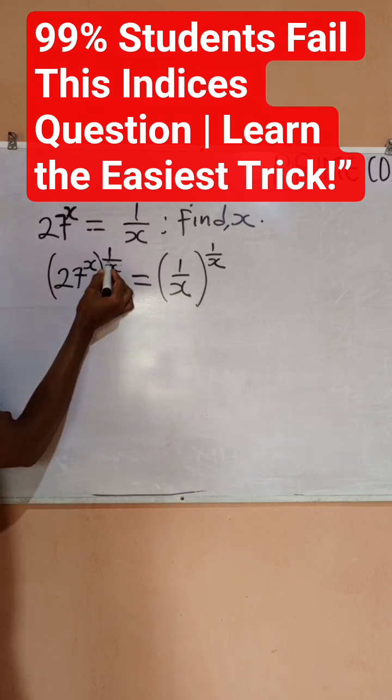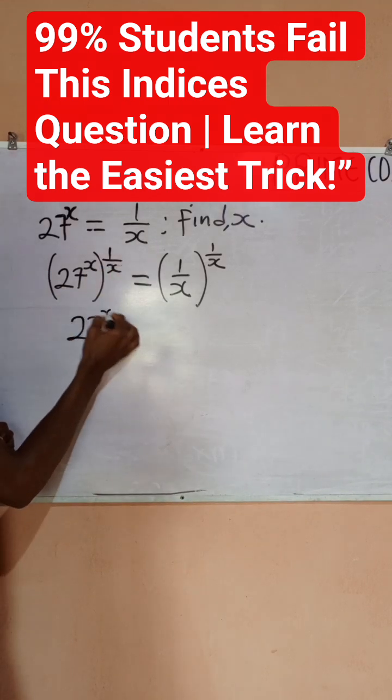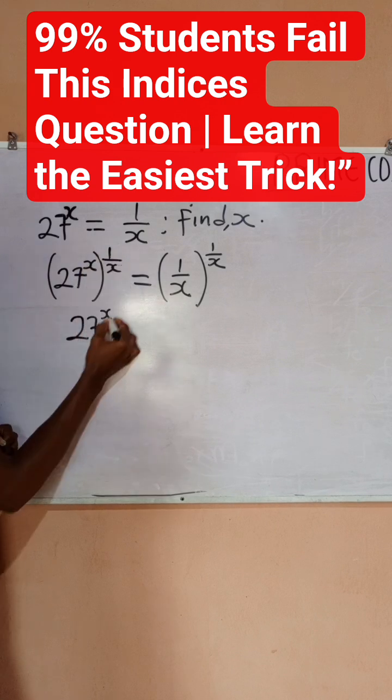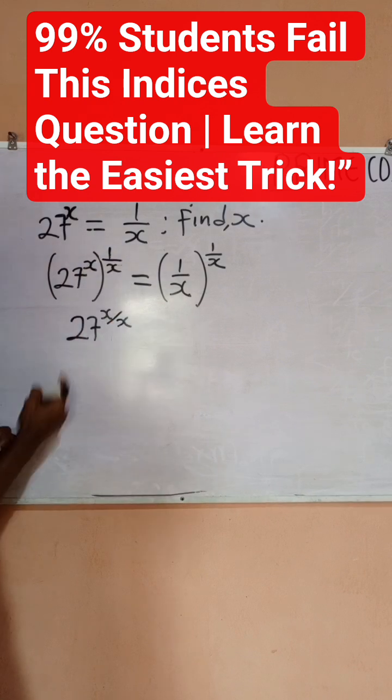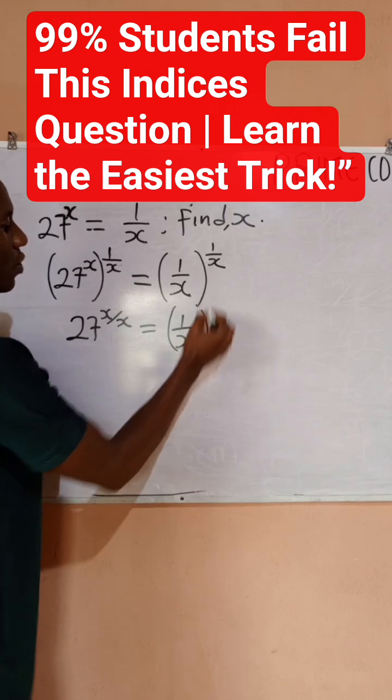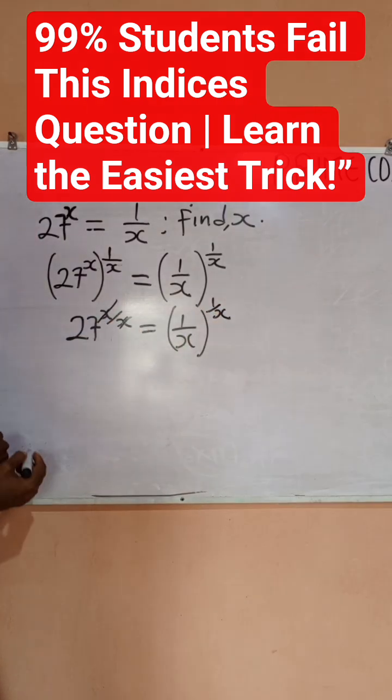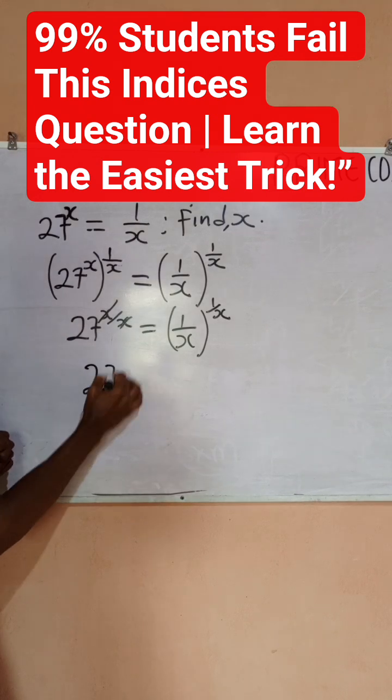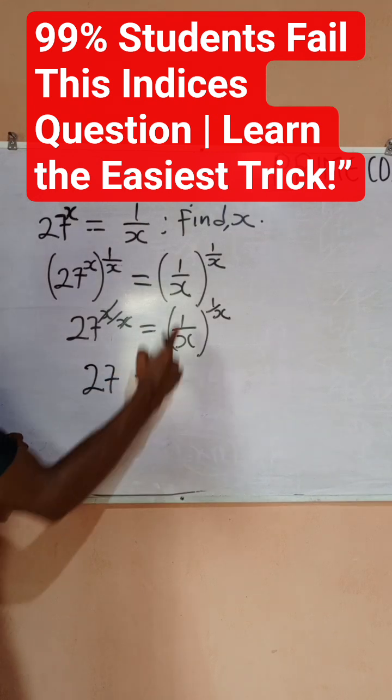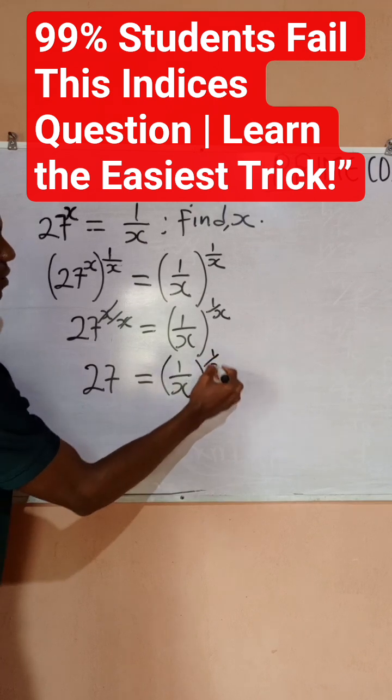When you expand this, you have 27 raised to power x times 1, which is x divided by x, equals 1 divided by x all raised to power 1 divided by x. This x and x can cancel, and you'll be left with 27, which equals 1 divided by x all raised to power 1 divided by x.